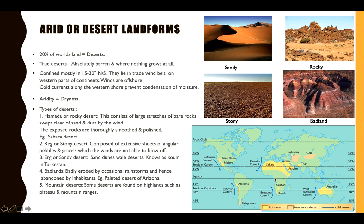Now let's look at the types of deserts. First is the Hamada, or Rocky Desert. As the name suggests, it is characterized by bare rocks — large stretches of rocks, like in the Sahara Desert. There is not much sand here; instead, you get bare rocks. As the wind blows, rocks break down into different sizes. This is a rocky desert — bare rocks of varying sizes.